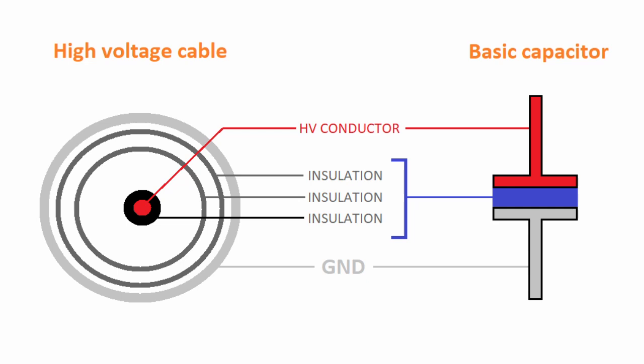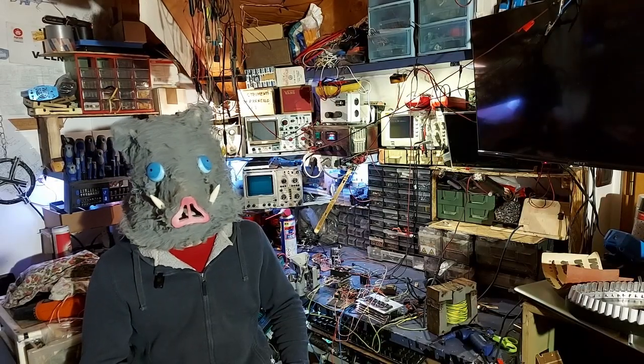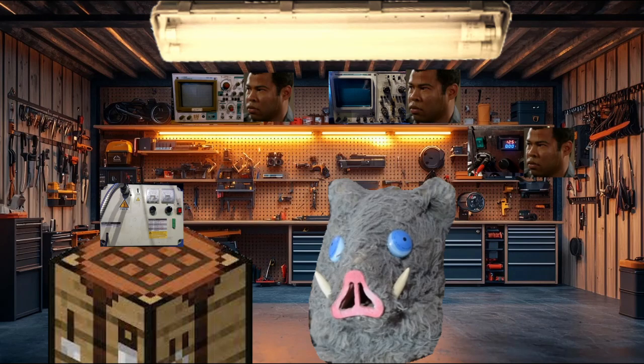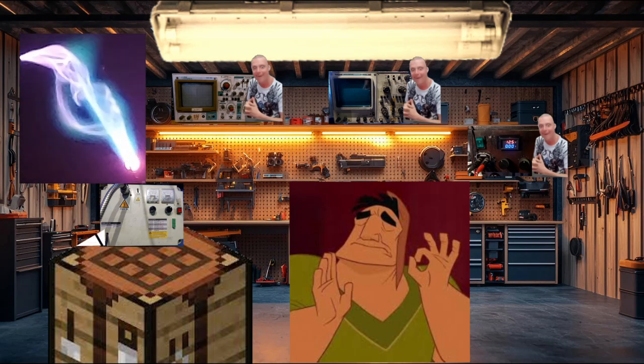The resistor array on the tip of the cable guarantees a stable current flow. Without them, the parasitic capacitance of the wire would create a series of strong discharges with very high current peaks, turning the entire thing into an EMP machine gun, very dangerous for nearby electrical devices.